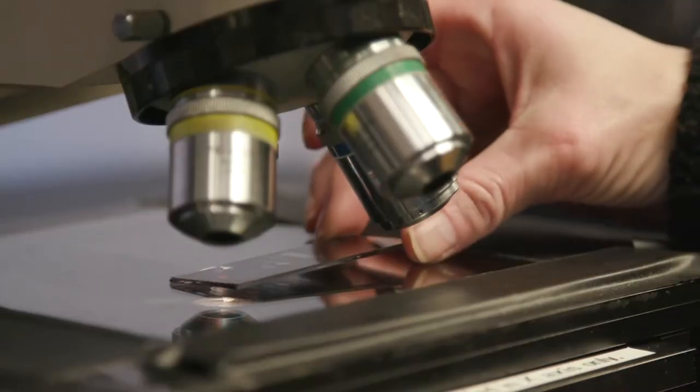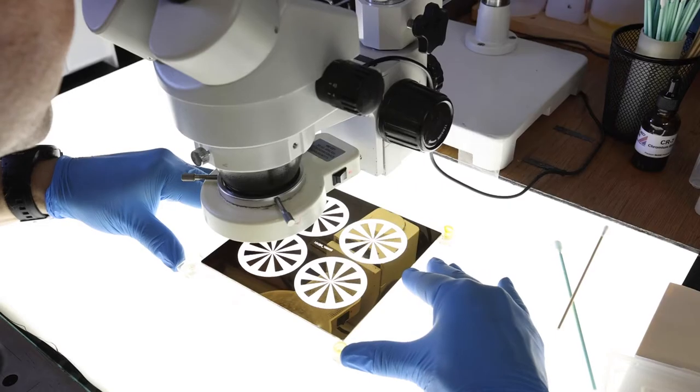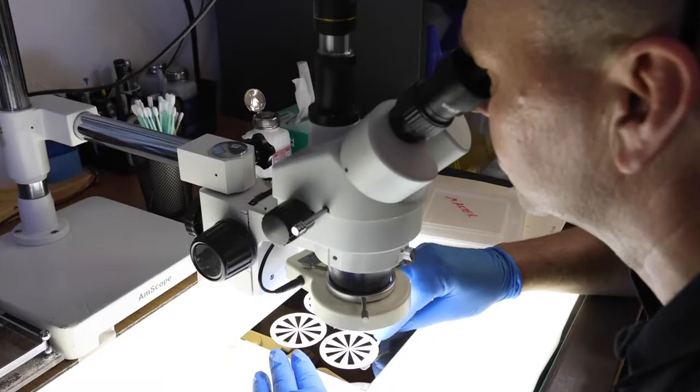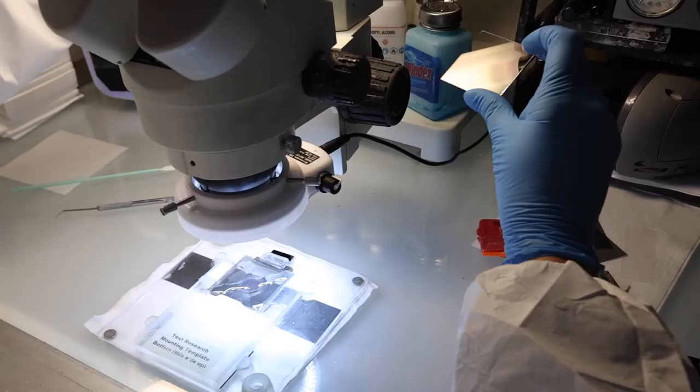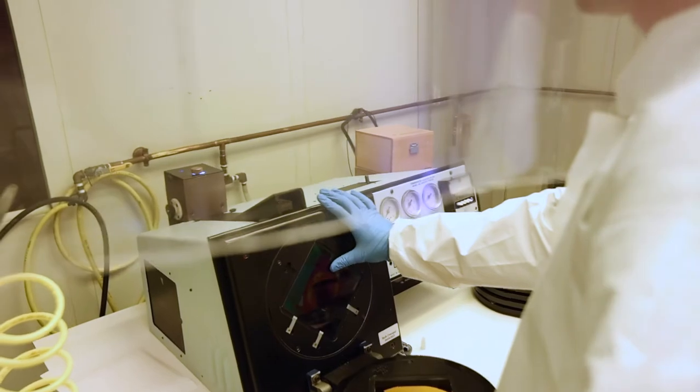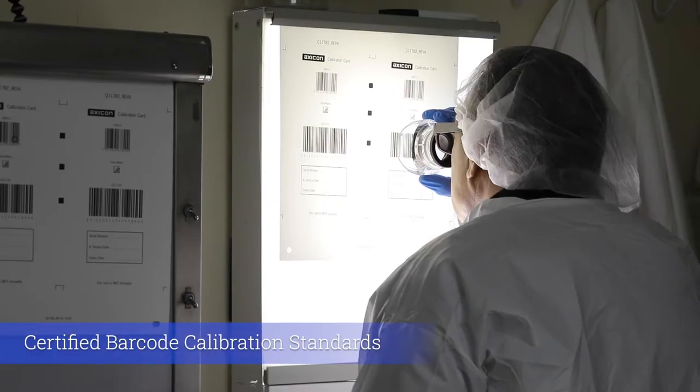The founder of the company, Bruno Glavich, started the company in 1978, developing test targets and charts that would be used for measuring image quality with camera-based systems and also heavily involved in early development of barcode calibration standards as well.